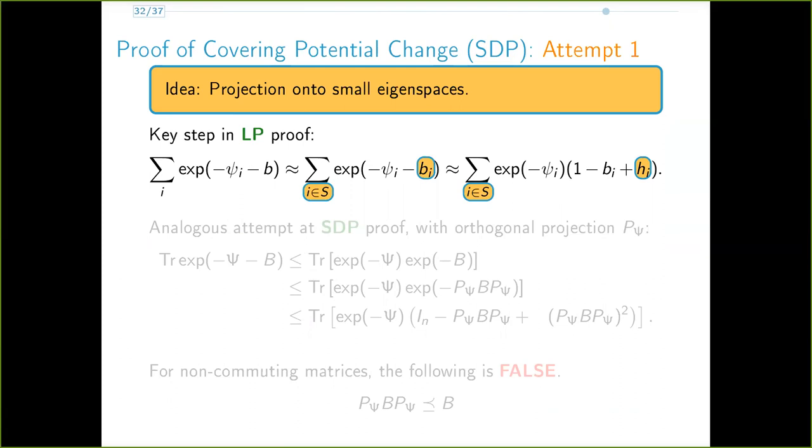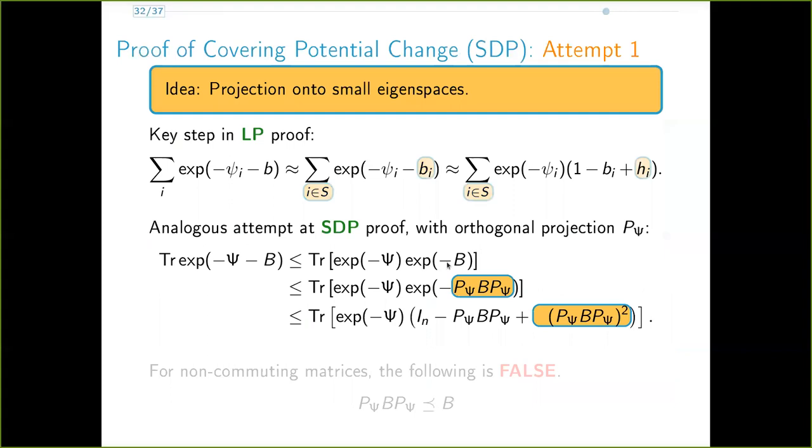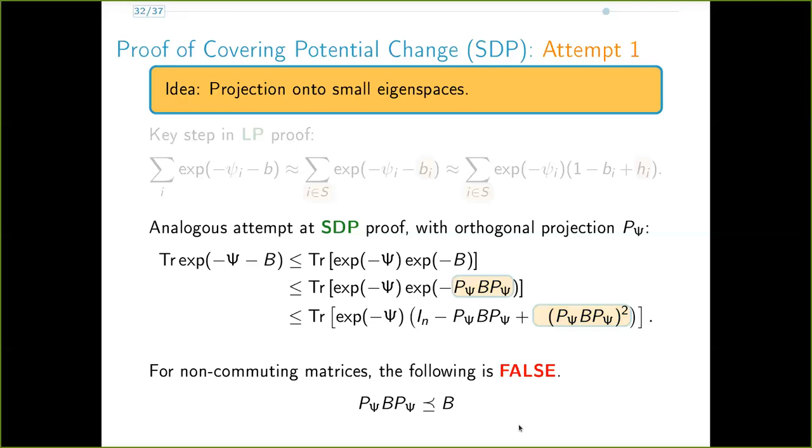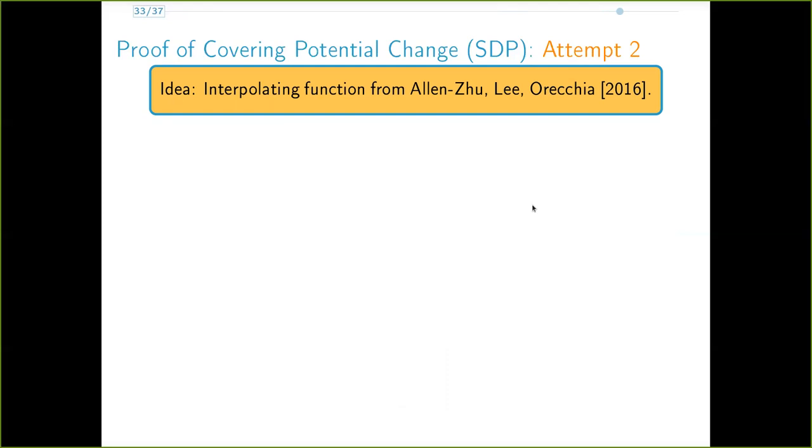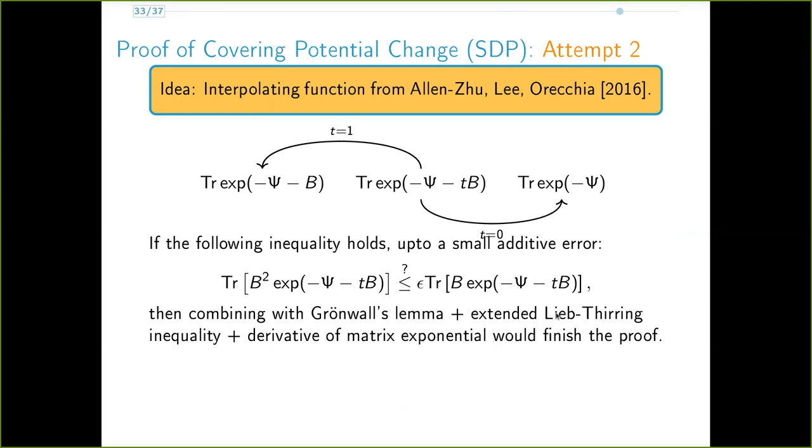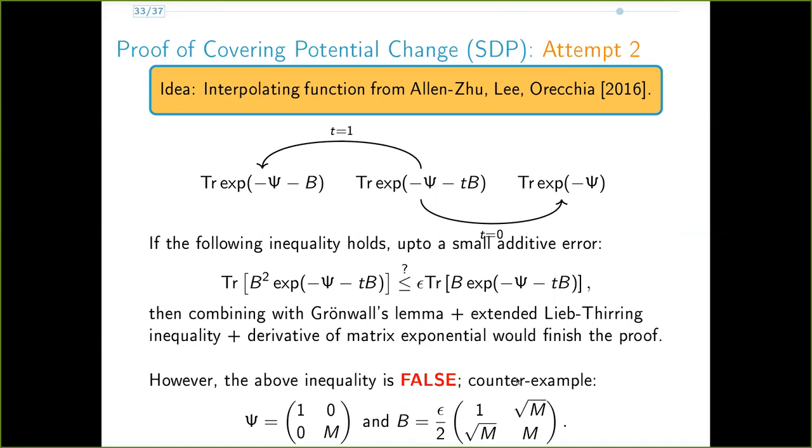Recall that the key idea in the covering potential proof in the LP case was to consider only the small coordinates of psi and add back in the terms with larger psi, thus suffering a small additive loss. In the SDP case, this would correspond to restricting ourselves to small eigen spaces of capital psi. But the issue is that this inequality which we used here is false, which means that this proof doesn't work by itself. Another approach we could consider is from the work of Alan Zhu, Lee, and Orekia in 2016. They construct a function that interpolates between the quantity that we want, which is trace exp of negative psi negative b, and the quantity that we have. And if we could prove this inequality up to a small additive error, then by applying the techniques of Azadello, we could finish the proof. But again, the problem is this inequality does not hold because we were able to construct a counterexample for it. And so this approach by itself also does not work.